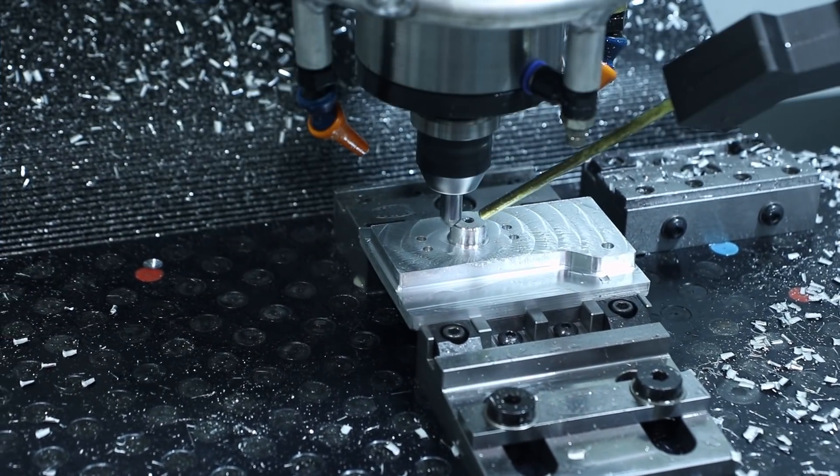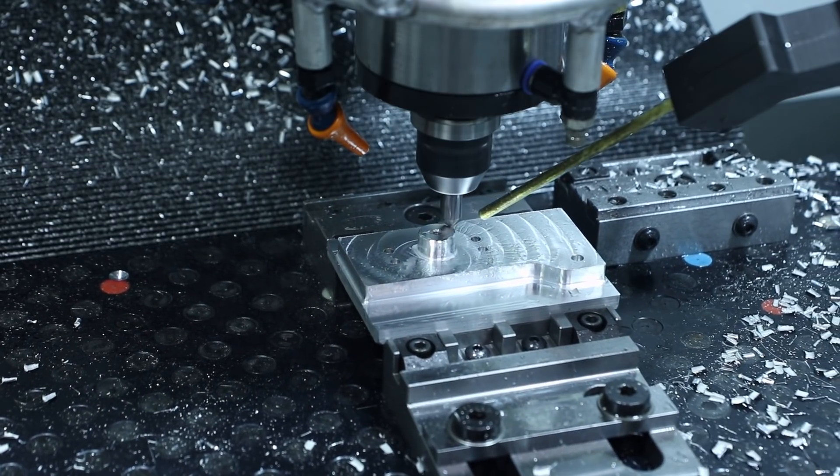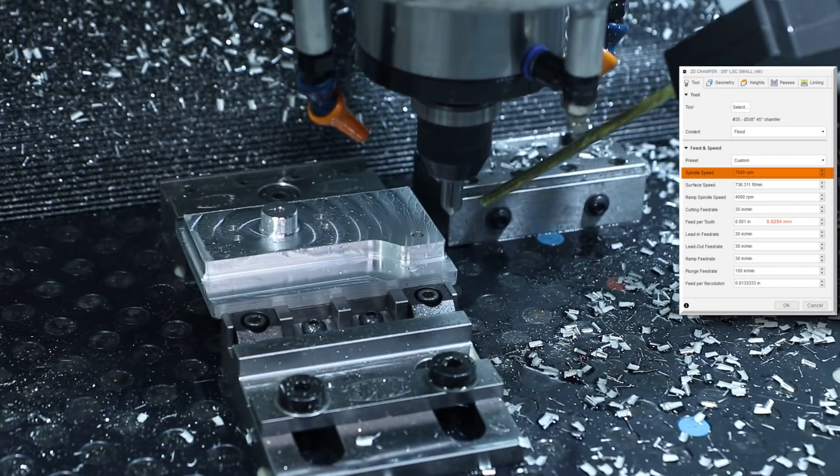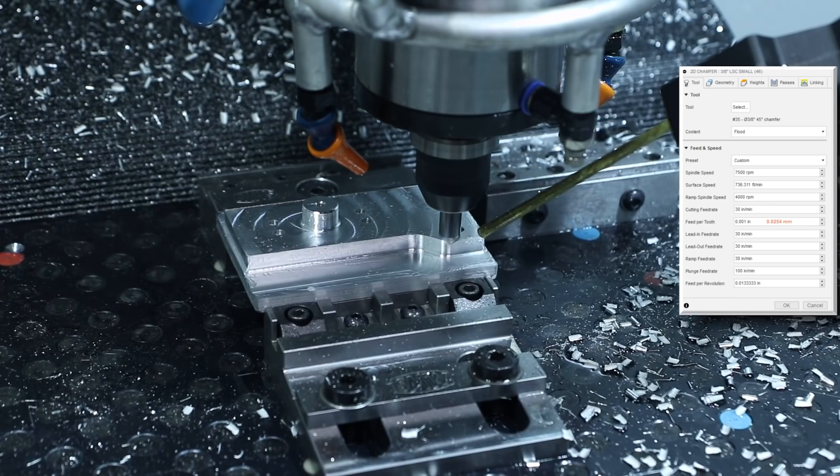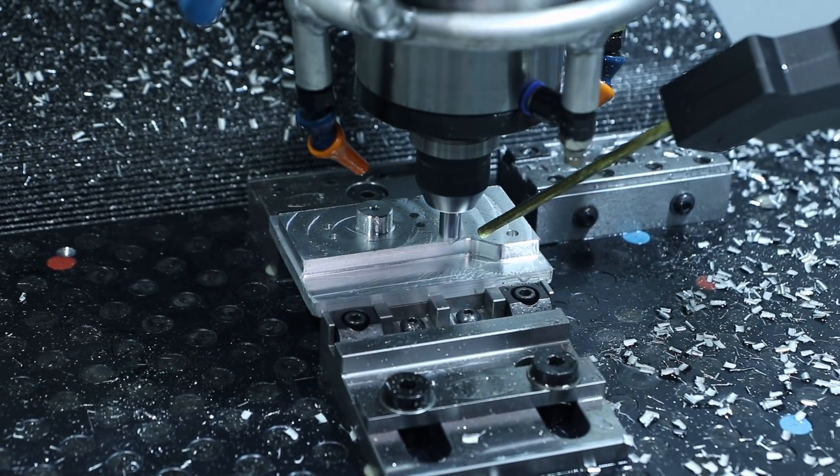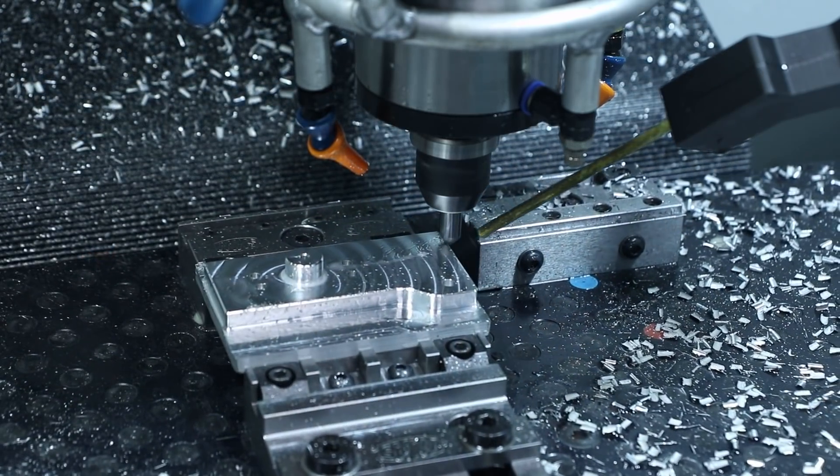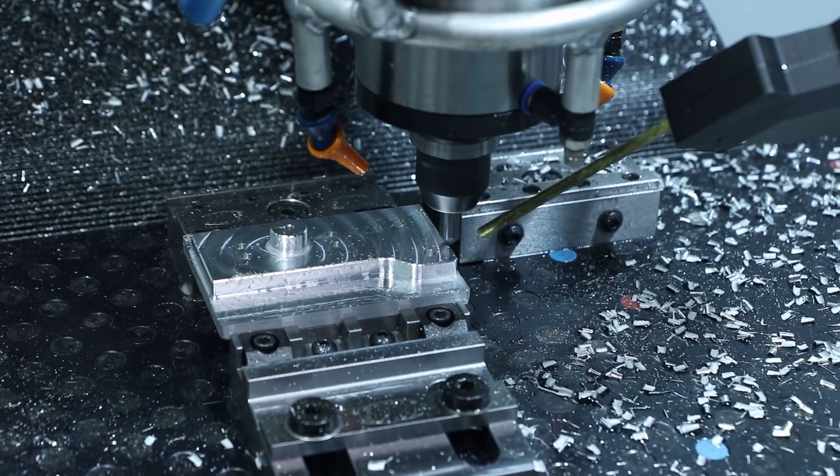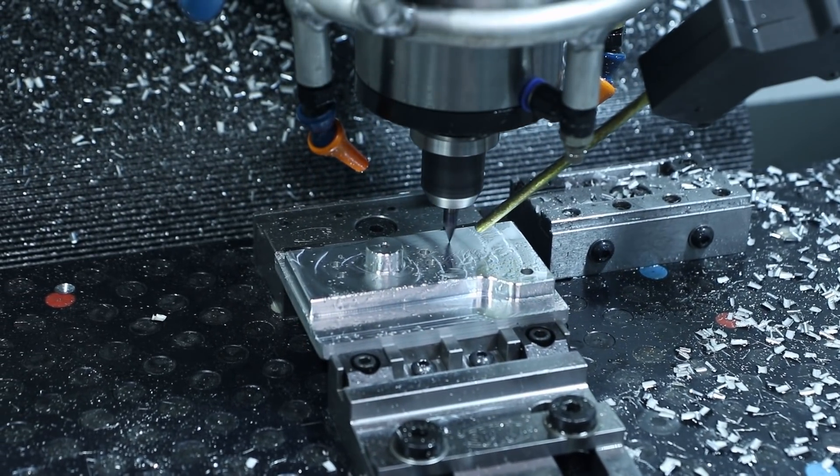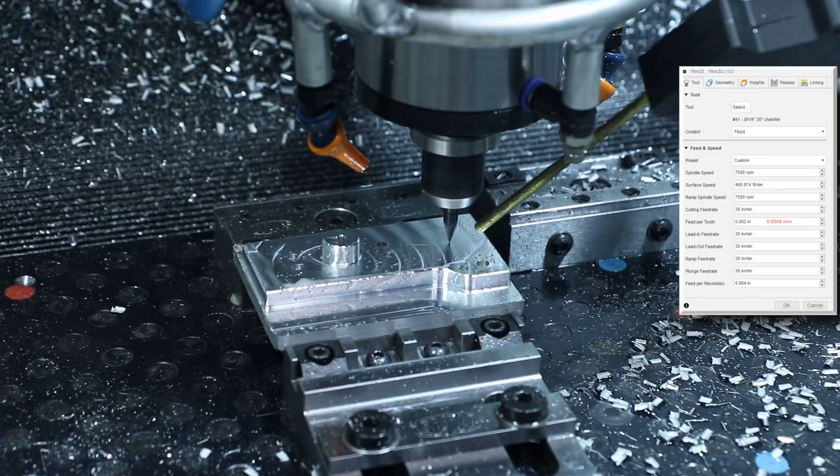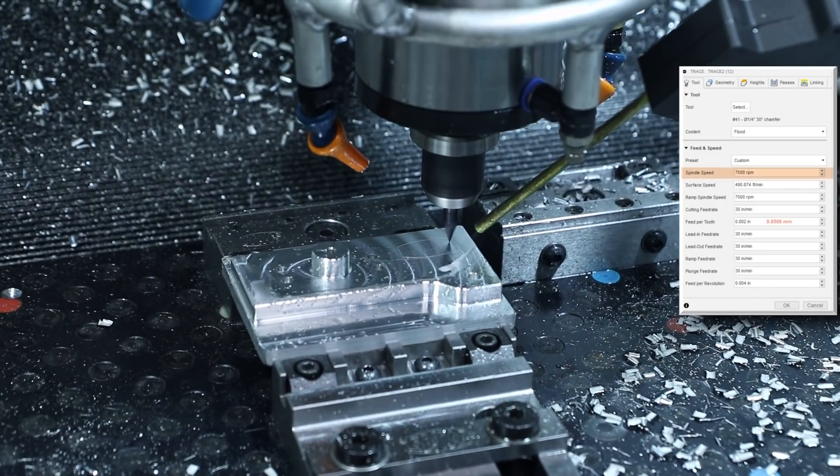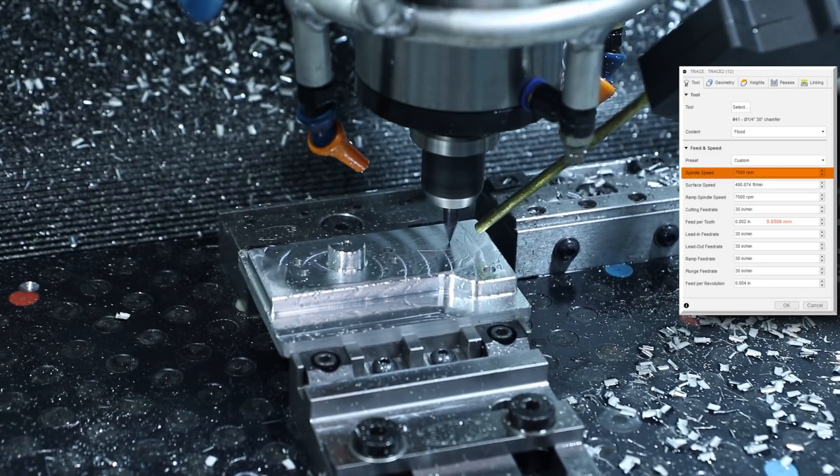Then chamfering with the three-eighths four flute Lakeshore carbide spiral flute chamfer mill. Max RPM 7500 and 1 thou per tooth. And of course engraving some branding with the Lakeshore carbide 20 degree engraving tool and a 2D trace toolpath. Max RPM 2 thou feed per tooth.